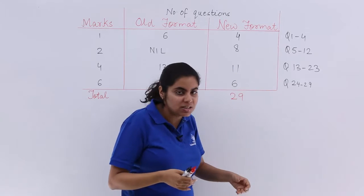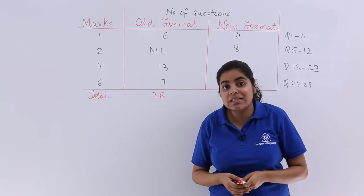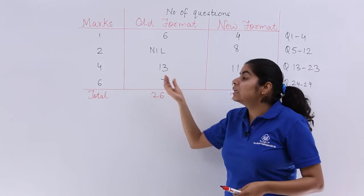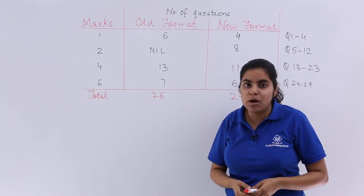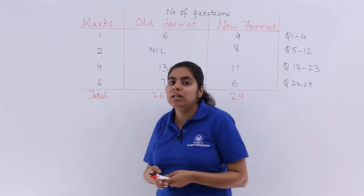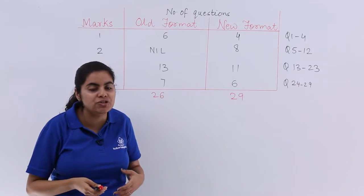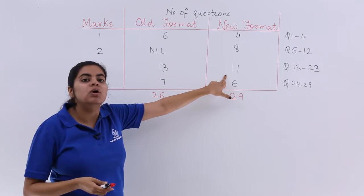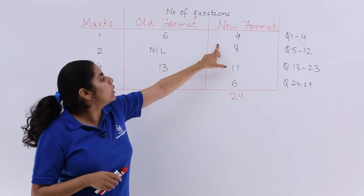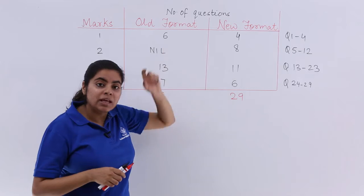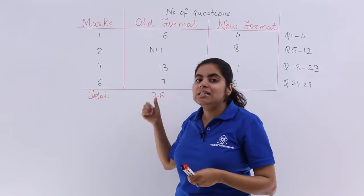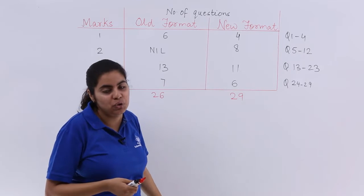So now you'll be having two mark questions also in your examination which are of 16 marks, because eight questions in the two mark segment means 2 times 8, that is 16. Next, four markers: there were 13 four markers used to come in exam, 4 times 13 is 52. 52 marks were earlier devoted to four mark questions but now it is only 11. So now the number of questions in the four markers have dropped down, number of questions in the one markers have dropped down. Even the number of questions in the six markers were earlier seven but now it is only six.